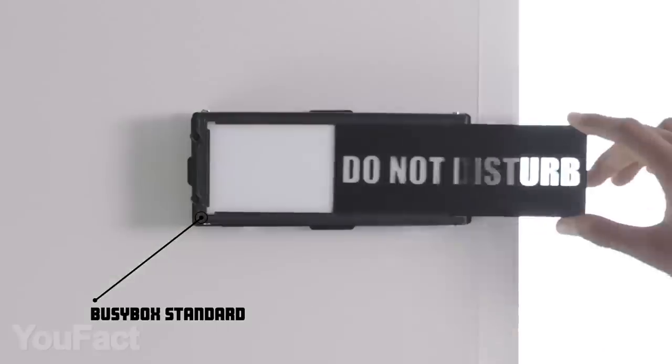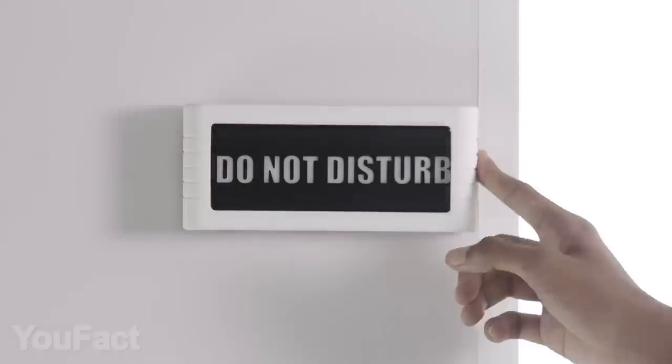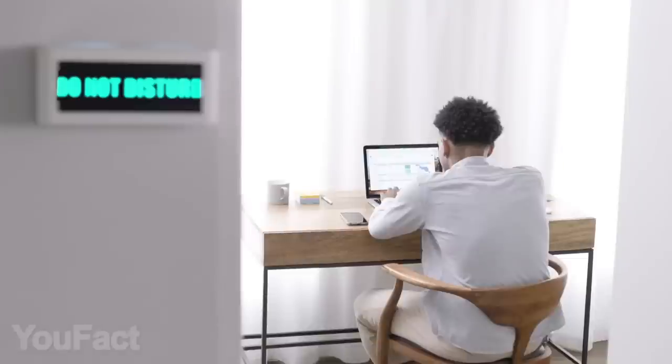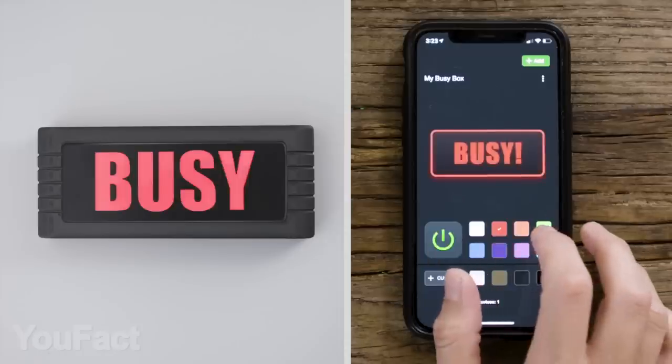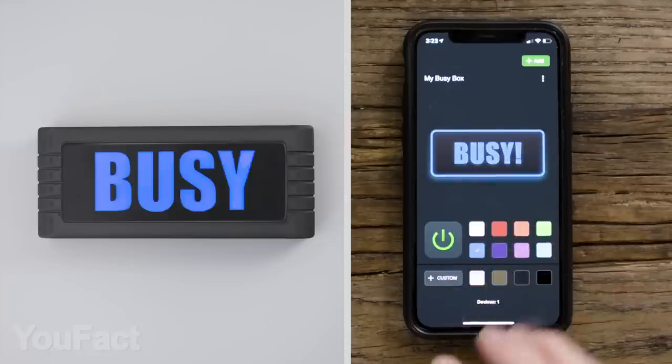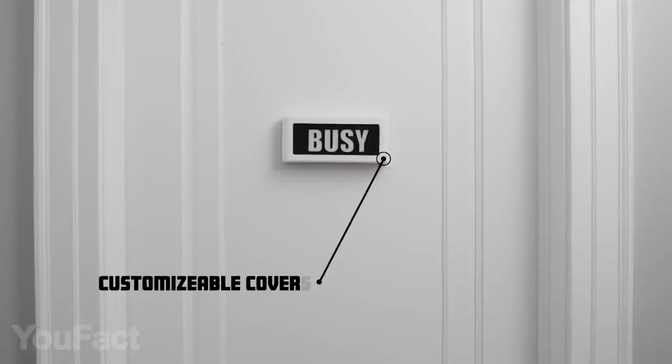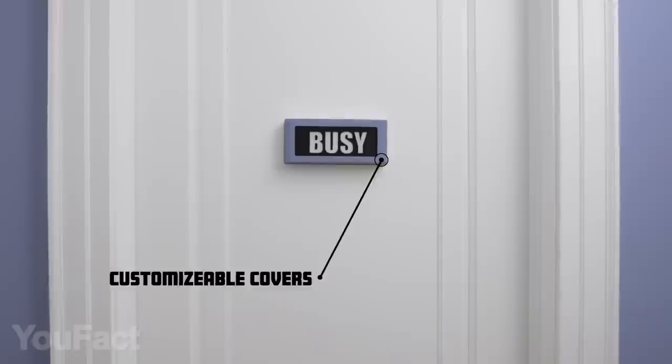Basic version includes several messages that you can swap easily. As you can see, there's a built-in backlight to attract everyone's attention. Both of them support remote control with an app where you can also change the color of your text. Moreover, BusyBox is compatible with Siri and other voice assistants. You can also sync it with your calendar. Hope this thing will prevent parents from breaking into my room.